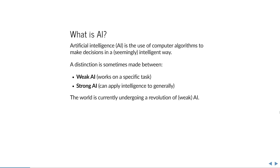Artificial intelligence is the use of computer algorithms to make decisions in an intelligent, or seemingly intelligent, way. A distinction is often made between weak AI, which applies intelligence to a specific task, and strong AI, which can apply intelligence generally. There is a revolution going on of AI being applied everywhere, and that is a revolution of weak AI. We don't possess any strong AI, and there are no serious advances in the development of strong AI either.